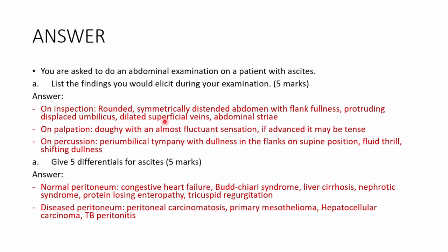There's going to be a rounded, symmetrically distended abdomen with flank fullness. The umbilicus will be protruding and displaced. You may see dilated superficial abdominal veins and abdominal striae. In early ascites, palpation gives a doughy, fluctuant sensation — like a water-filled balloon. In advanced stages the abdomen feels tense. On percussion, there may be periumbilical tympani with dullness in the flanks when supine, shifting dullness, and a fluid thrill.